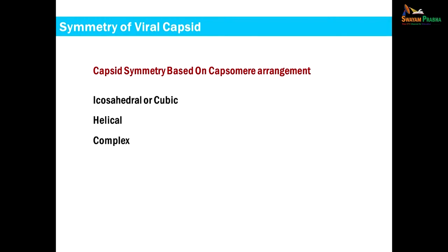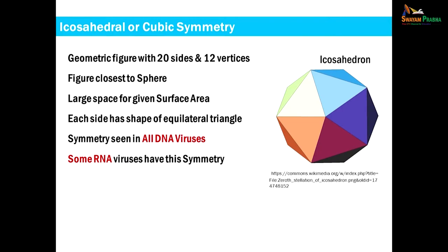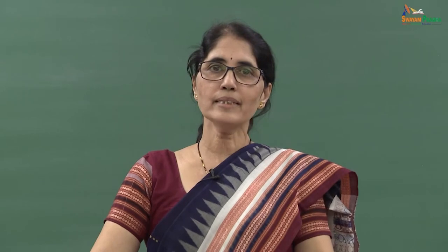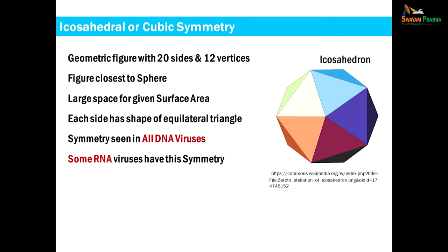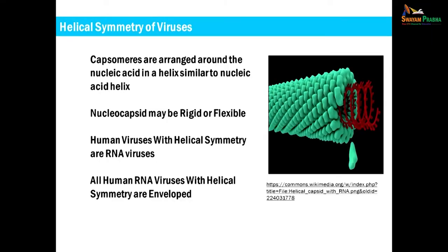On the basis of the arrangement of capsomeres in the capsid, three types of symmetries can be seen in viruses: icosahedral or cubic symmetry, helical symmetry, and complex symmetry. In icosahedral or cubic symmetry, the capsid has the shape of an icosahedron — a geometric figure with 20 sides, 12 vertices, and 30 edges. This shape is closest to a sphere, so a large amount of space is available with a limited surface area. Each face of the icosahedron has the shape of an equilateral triangle. This type of symmetry is seen in all human pathogenic DNA viruses and some RNA viruses.